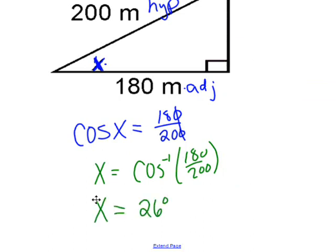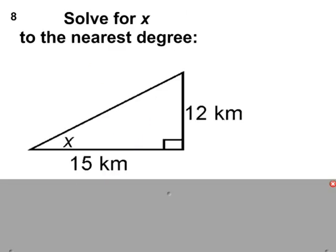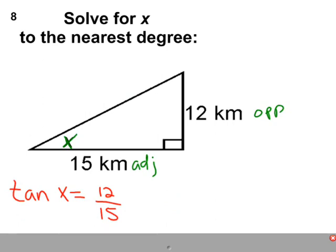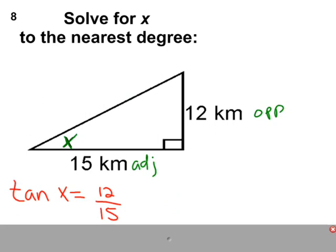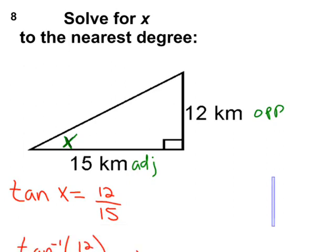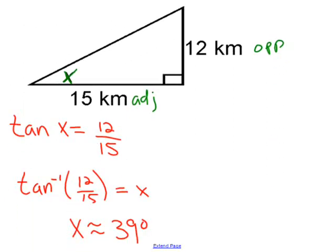Let's try one more. Hopefully you were able to tell that this is the adjacent side and this is the opposite side. So if you have opposite and adjacent, you're going to be dealing with tangent. You set up an equation: tan(x) equals 12 over 15, and then you take the inverse tangent of both sides. Go to your calculator and you should get 39 degrees.